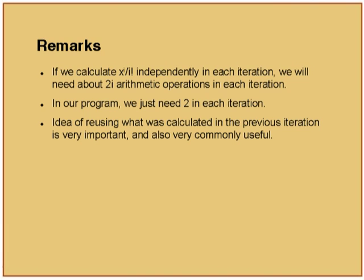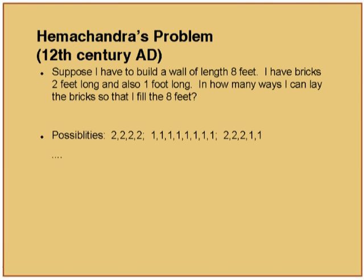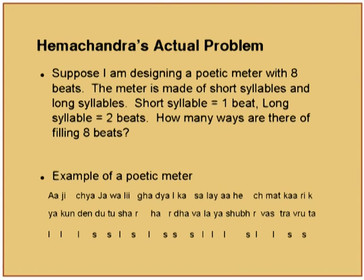These are Hemchandra's problems from the 12th century AD. Suppose I have to build a wall of length 8 feet — I have bricks 2 feet long and also 1 foot long. In how many ways can I lay the bricks to fill 8 feet? Similarly, suppose I am designing a poetic meter with 8 beats — the meter is made of short syllables of 1 beat and long syllables of 2 beats. How many ways are there of filling 8 beats? Here is an example of a Marathi song given as an illustration, showing long and short beats.